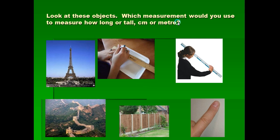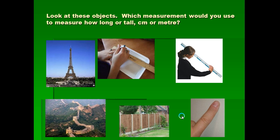Which measurement will you use to measure how long or tall an object is — centimeter or meter? To measure an airfield tower, which is a very tall building, you use meters. For objects measured with a ruler, you use centimeters. When you use a ruler, that tells you it is a short length or short distance. When you use a meter, it means it is a long distance.